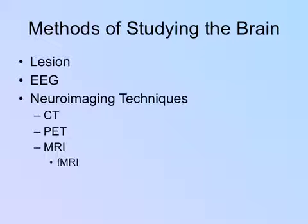A PET scan stands for positron emission tomography, and it depicts brain activity by showing the areas of the brain that are consuming glucose. The patient is injected with radioactive glucose, and when areas of the brain are active, those neurons consume glucose as it's converted into energy for the cells. That can tell us a lot about where changes in activity happen, but it can't tell us much about the brain's physical structure. So CAT scans show us the physical structure but not activity, while PET scans show activity but not structure — pros and cons to each.